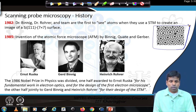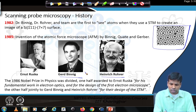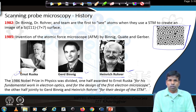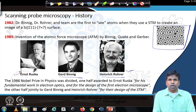For their contribution, Gerd Binning and Heinrich Rohrer received the Nobel Prize in physics in 1986. One half of the Nobel Prize was given to these two scientists for the discovery of the scanning tunneling microscope. The other half was given to Ernest Ruska for his contribution to electron optics, particularly the design of the electron microscope. Another scientist, Erwin Muller, had contributed extensively to ion microscopy but died in 1977 and therefore could not receive the Nobel Prize.